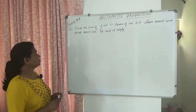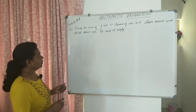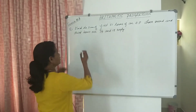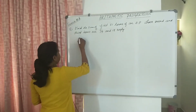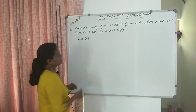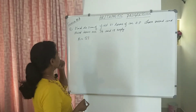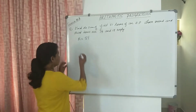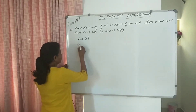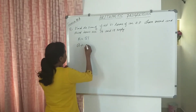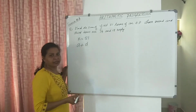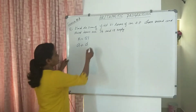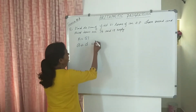Eighth question of exercise 5.3. 51 terms, so N equal to 51. Whose second and third terms are given. Second term is 14, so the second term is A plus D. First term A and second term A plus D is equal to 14.